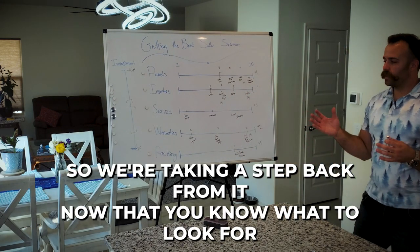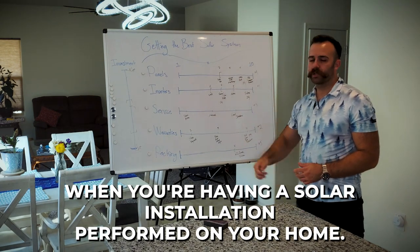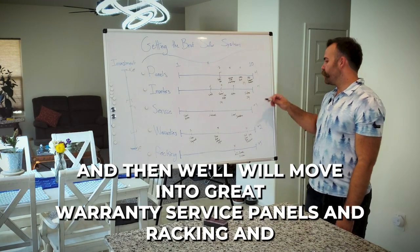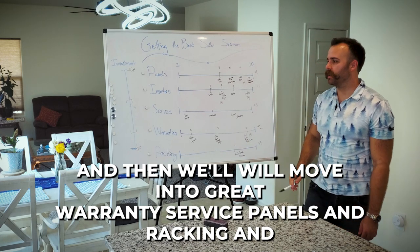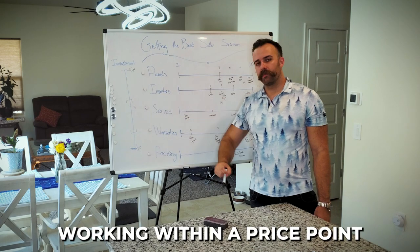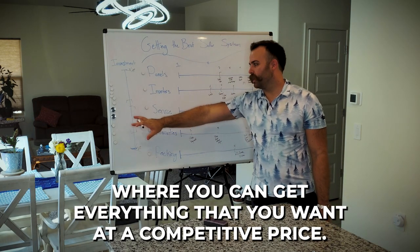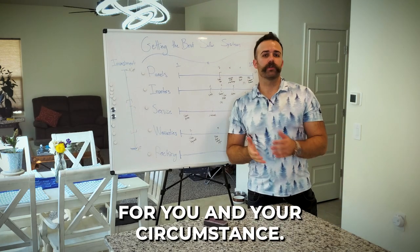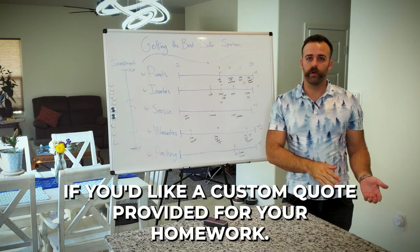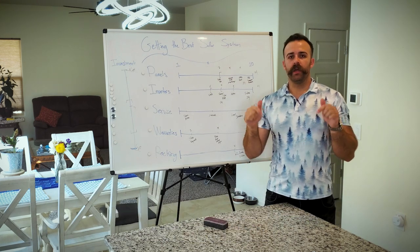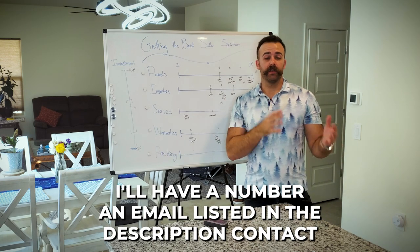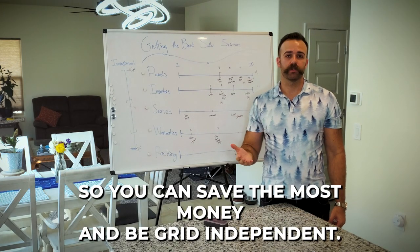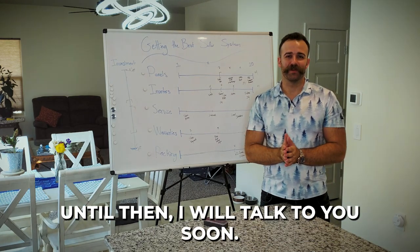So taking a step back from it, now that you know what to look for when you're having a solar installation performed on your home, just remember, I always lean into the best possible inverters. And then we'll move into great warranties, service, panels and racking, and working within a price point where you can get everything that you want at a competitive price point is the win-win. So it's been an honor to go over how to get the best solar system for you and your circumstance. If you'd like a custom quote provided for your home, or if we're already in contact and need to email over your utility bill, you can do so by reaching out. I'll have my number and email listed in the description, and we will get you set up with the best possible system for your home so you can save the most money and be grid independent. Until then, I will talk to you soon.